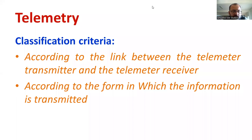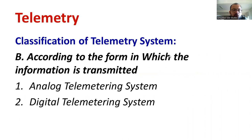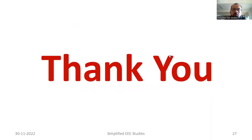To conclude the session: we discussed the different types of telemetry systems according to the link between telemetry transmitter and receiver, including voltage telemetry, current telemetry, and position telemetry. According to the form in which information is transmitted, there are two types: analog telemetry and digital telemetry. If you have any queries, you can put them in the comment box, or send a mail to get the notes. Thank you for watching. Have a happy learning.